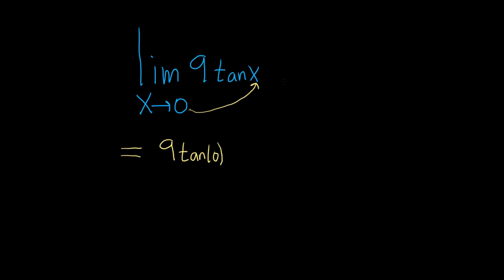If you don't know what the tangent of 0 is, you can use the calculator. Or keep in mind that tangent of x is equal to sine x over cosine x. So we're really looking at tangent of 0, which is simply sine 0 over cosine of 0.